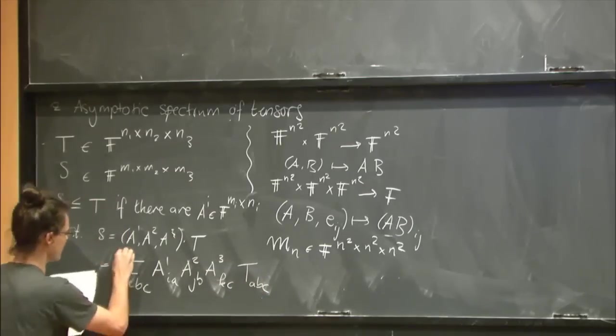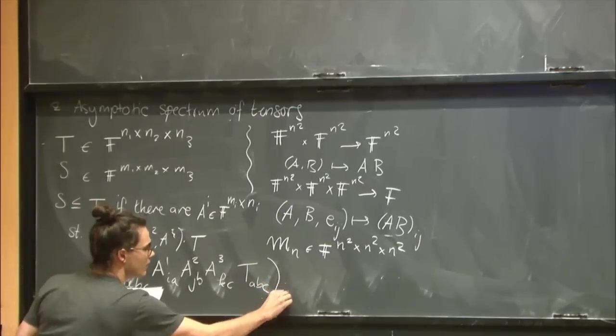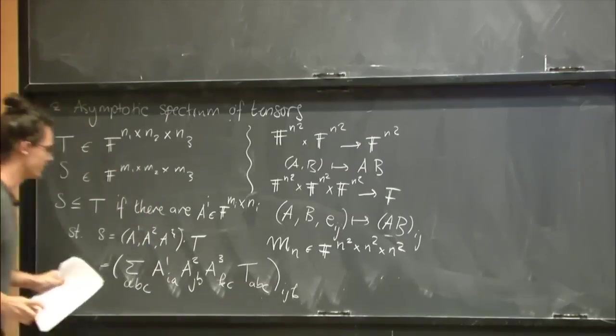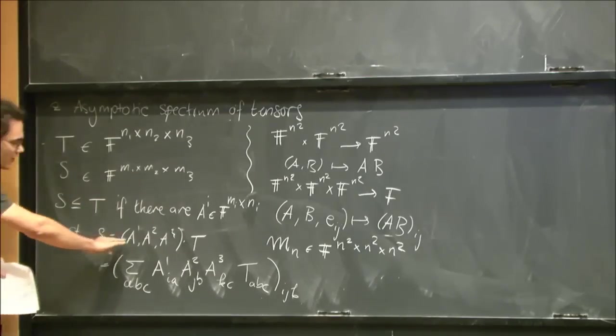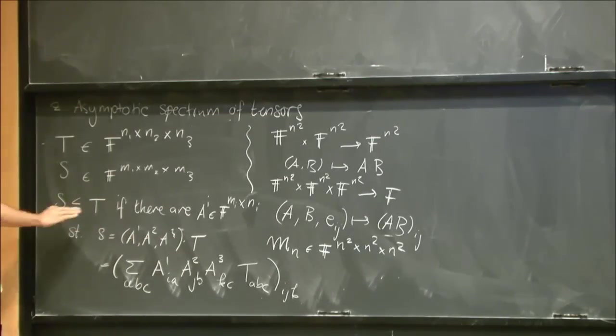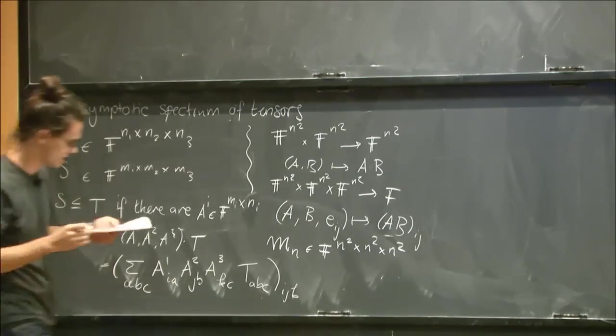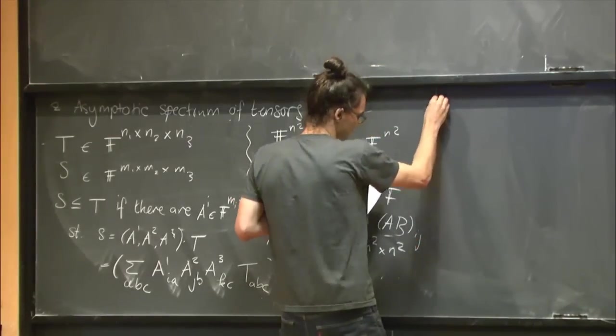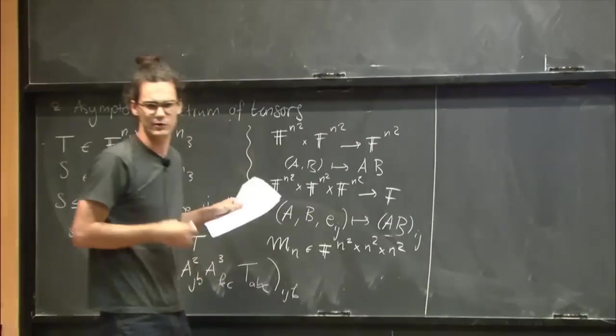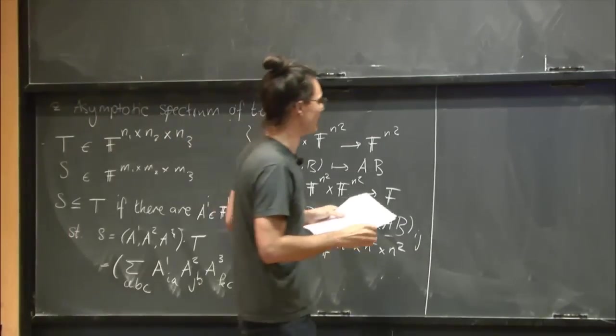So it's like, for matrices, it means multiplying your matrix from the left and from the right with another matrix. But now I have a tensor, so I can apply these three matrices to the three sides of my tensor. So if T is easy to compute, then somehow applying these linear maps doesn't do much to the complexity. So if T is easy to compute, if I have a good algorithm for T, then I will get a good algorithm for S. That's some other intuition.